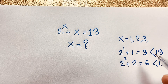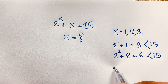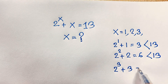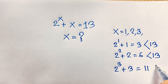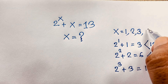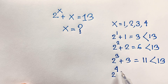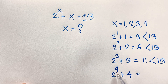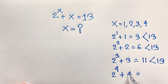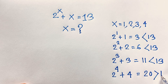Now if you think x is equal to 3, you can see here 2 to the power 3 plus 3. This is 8 and this is 3, so it will be 11 — it is less than 13. Then if you think x is equal to 4, you can see here 2 to the power 4 plus 4. 2 to the power 4 is 16, and 16 plus 4 will be 20. So 20 is greater than 13.